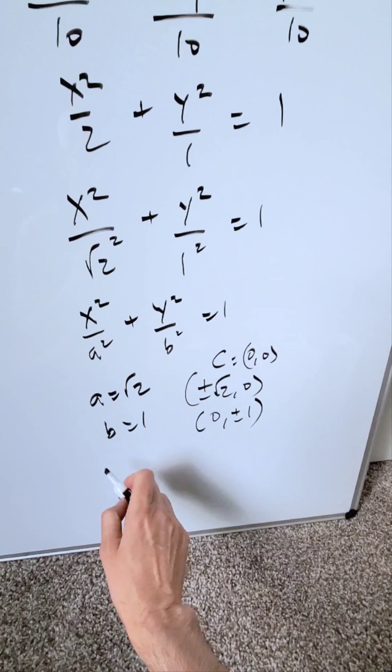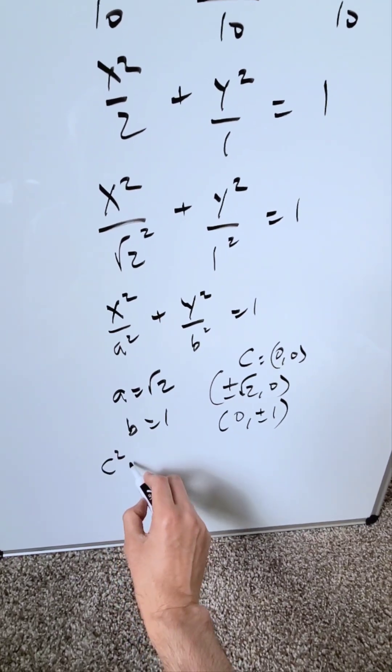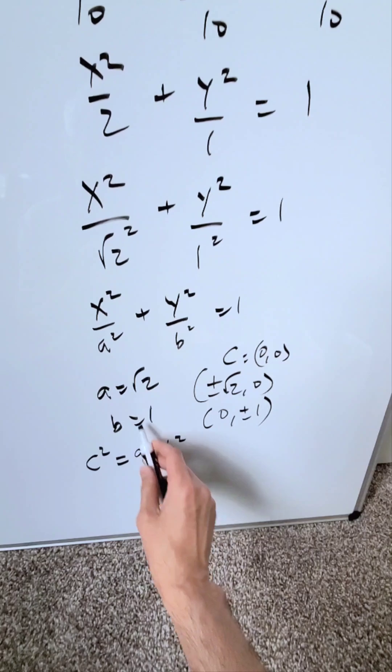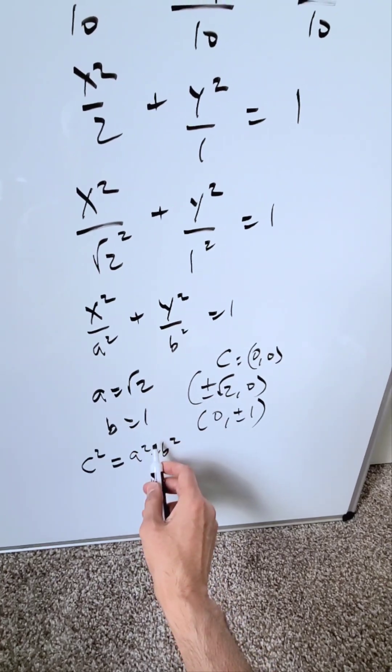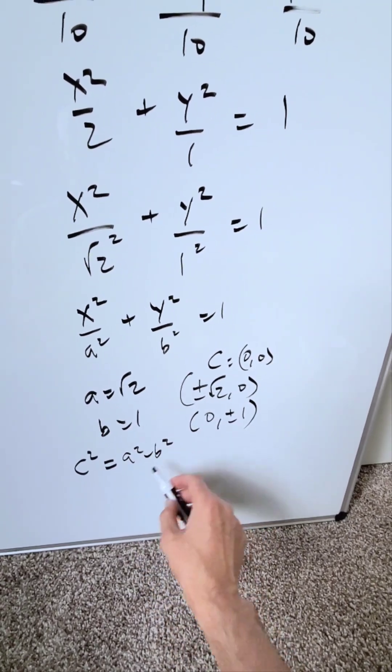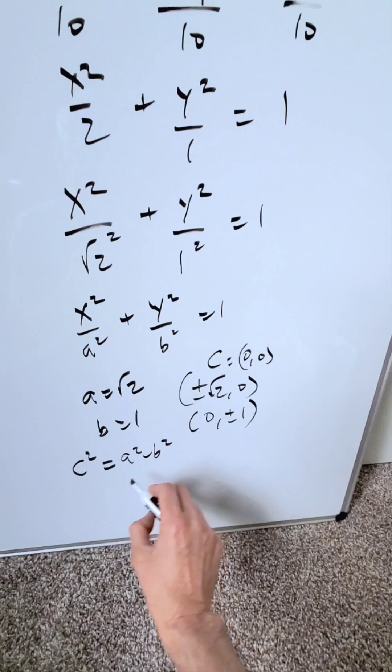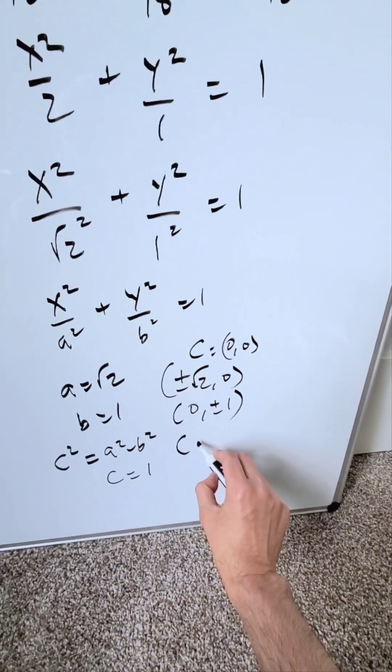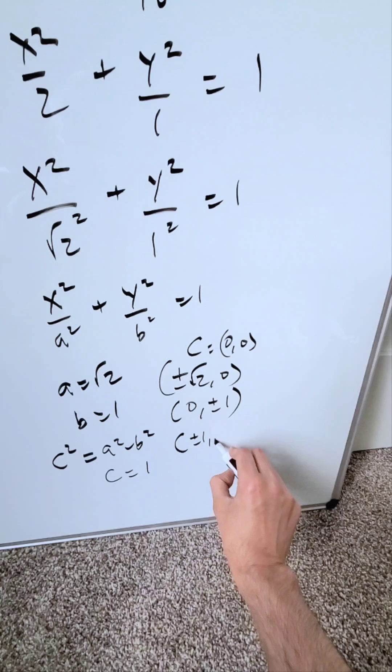We can easily determine the focal point. For ellipse, c square is equal to a square minus b square. You run these in, I'll have root 2 square minus 1 square which will be 2 minus 1. Root of that will be 1. I know here c is equal to 1. That means I'll be looking at focal points which will be plus and minus 1 comma 0.